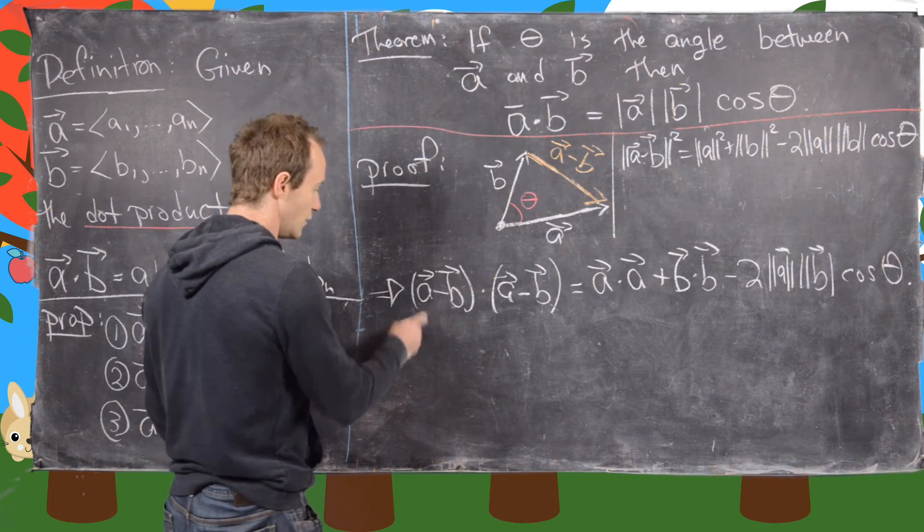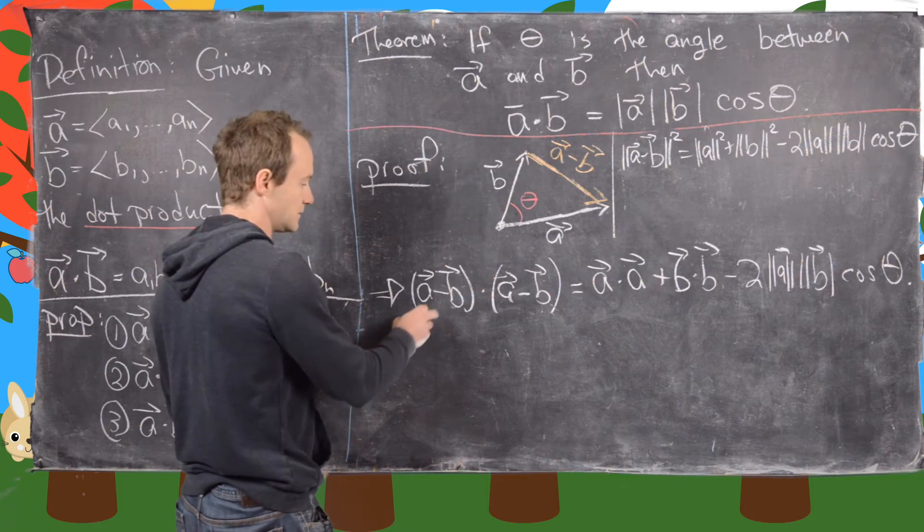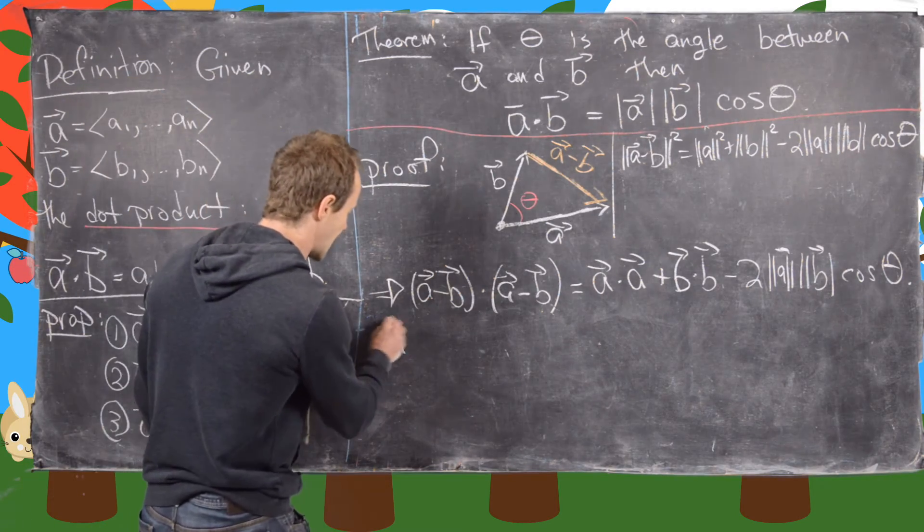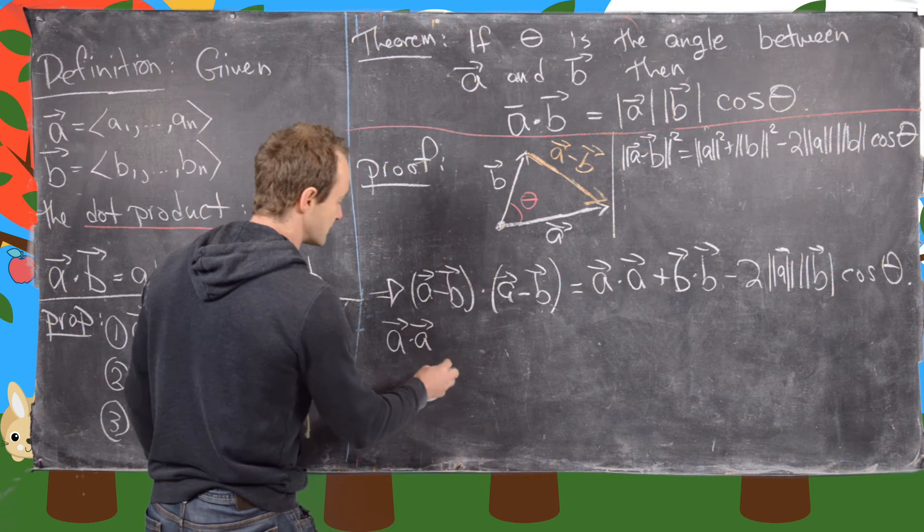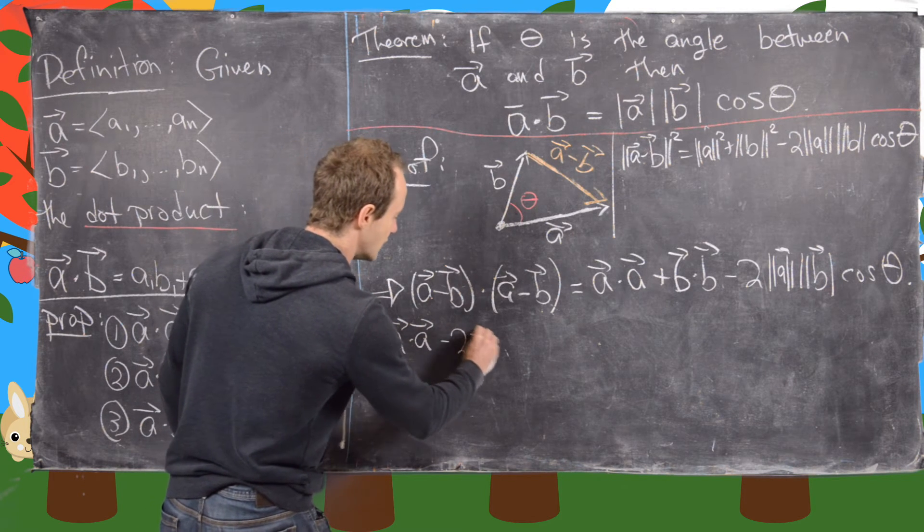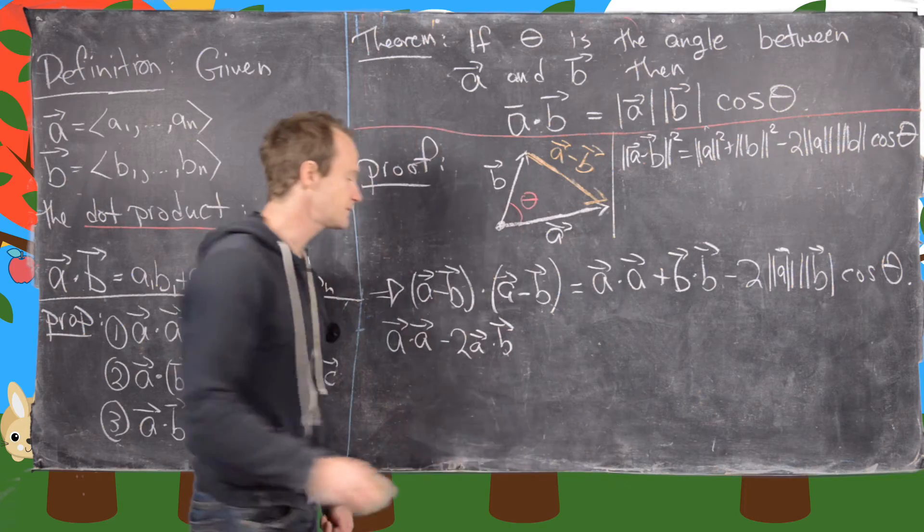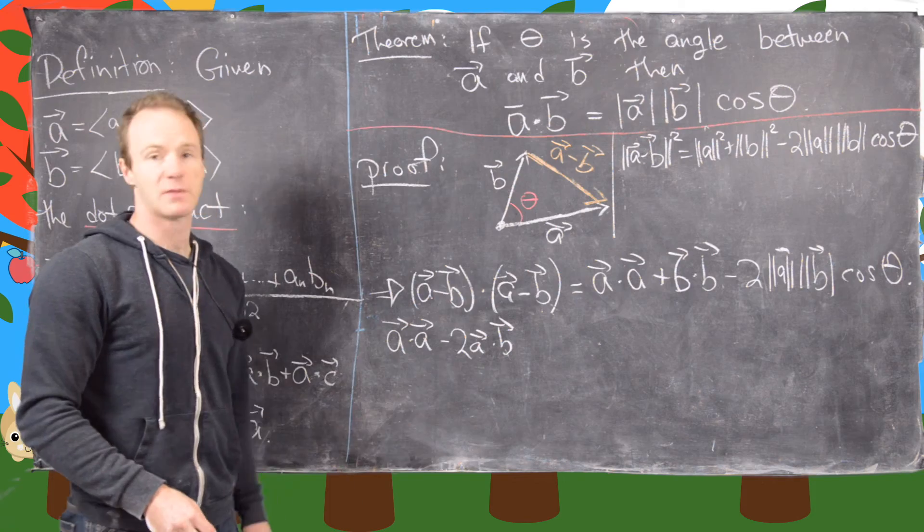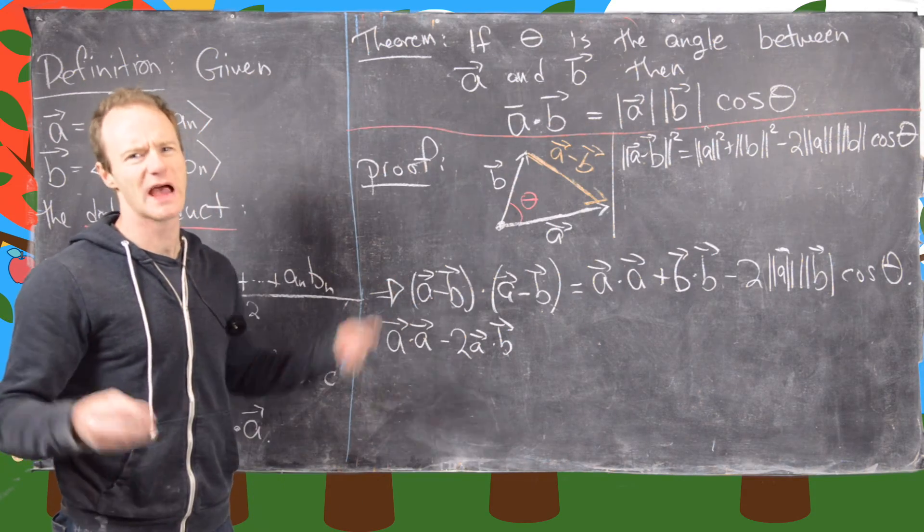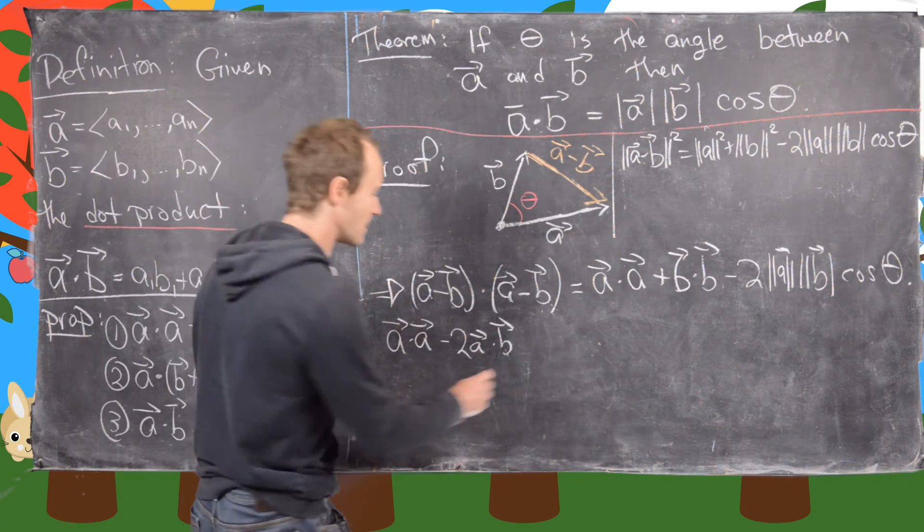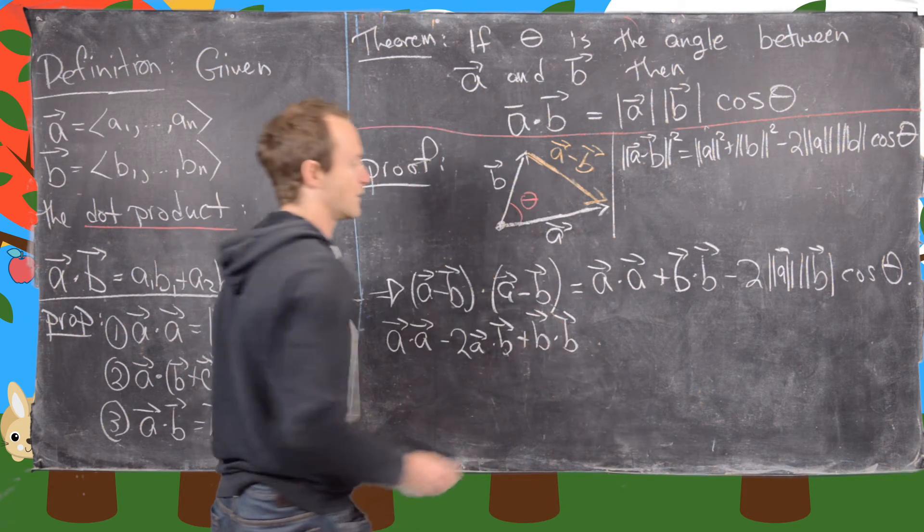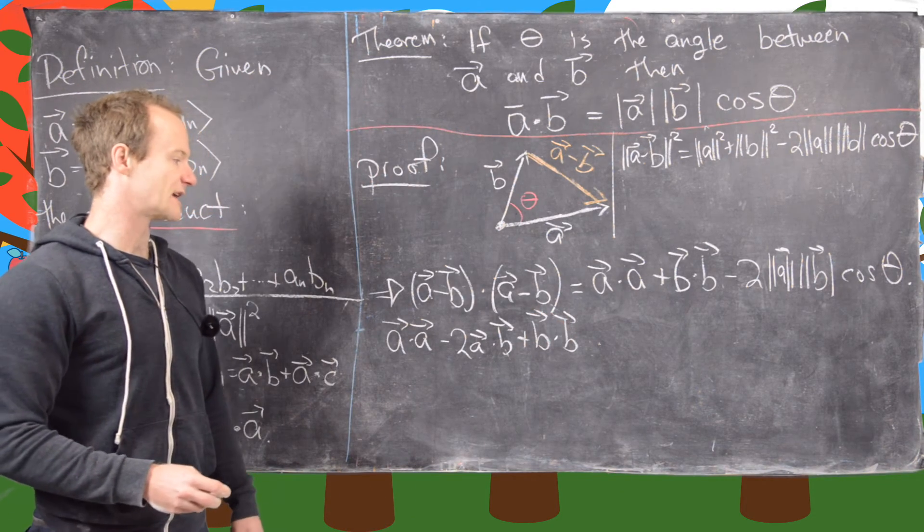So now, but notice, we can foil this out. And if we foil this out on the left-hand side, we will get A dot A minus 2 A dot B. So we see that we get A dot B with a minus sign, B dot A with a minus sign. But the dot product is commutative, which we haven't checked, but that's easy to check. And then plus B dot B. Okay, good. So we've got something like that.